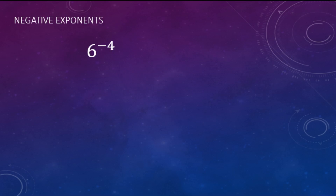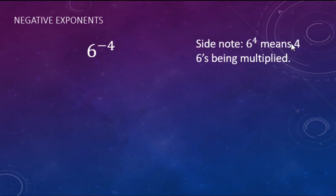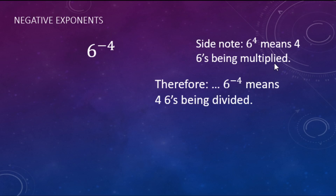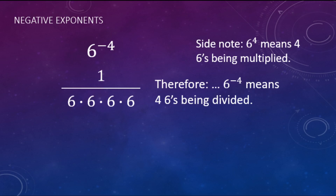Now let's look at 6 to the negative fourth power. Since 6 to the fourth power means four 6s being multiplied together, 6 to the negative fourth is the opposite — instead of multiplying, we have four 6s being divided. We write this as 1 over 6 × 6 × 6 × 6, which we can rewrite with an exponent as 1 over 6 to the fourth. So 6 to the negative fourth power equals 1 over 6 to the positive fourth power.